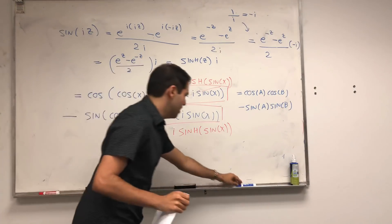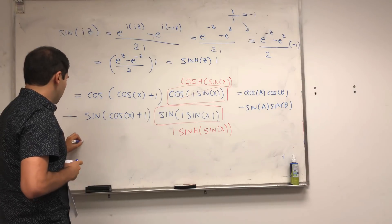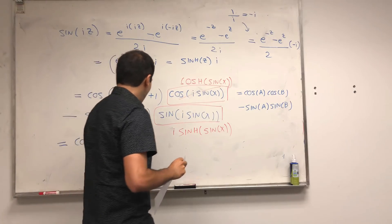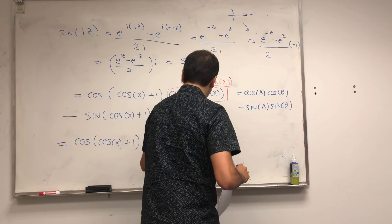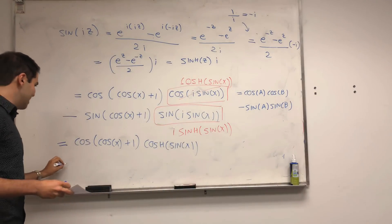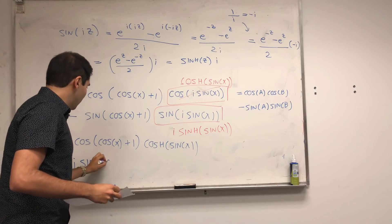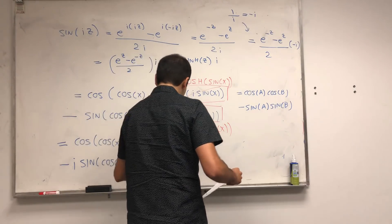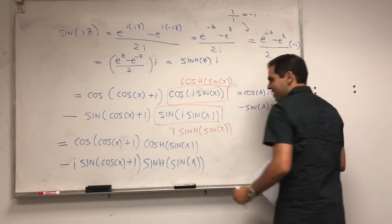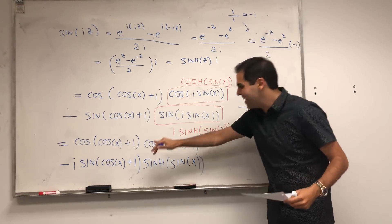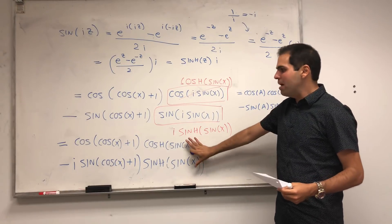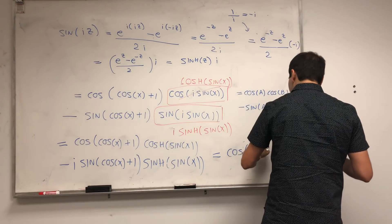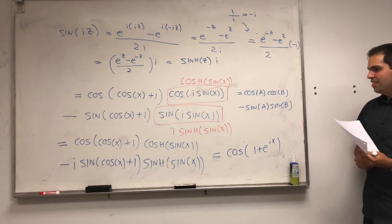Going back to this formula, we do get in the end that this thing becomes cosine of cosine of x plus 1, cosh of sine of x, and then, remember, we have this minus i sine of cosine of x plus 1, sinh of sine of x. And if you're taking notes, this is exactly the expression we had at the beginning. And remember, what does this calculate? This just calculates cosine of 1 plus e^(ix).